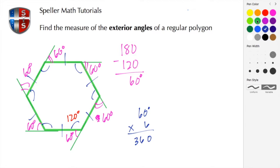With method number 2, what we need to do is take the 360 degrees and divide that by the number of sides in our particular polygon. In this case, the number of sides is 6. So 360 divided by 6.